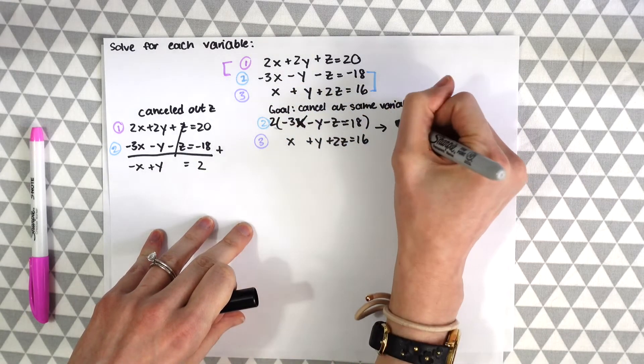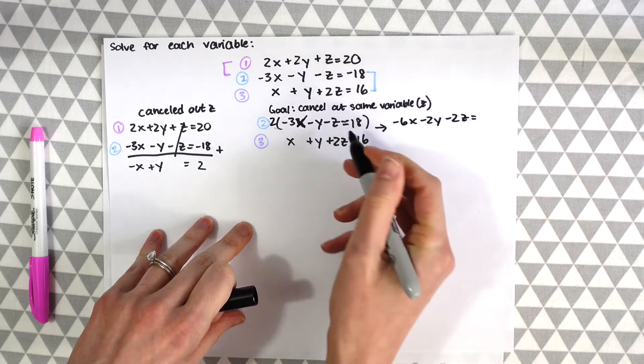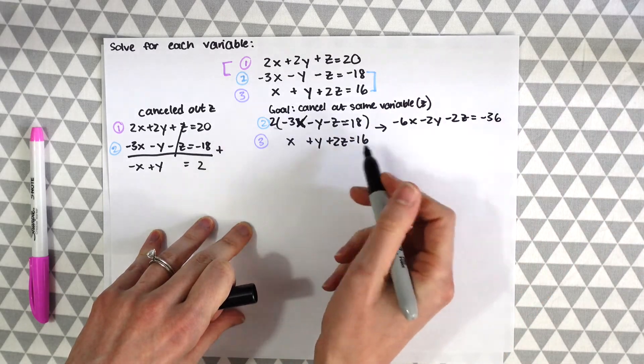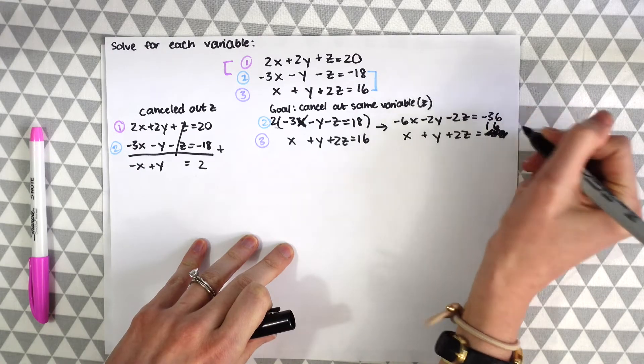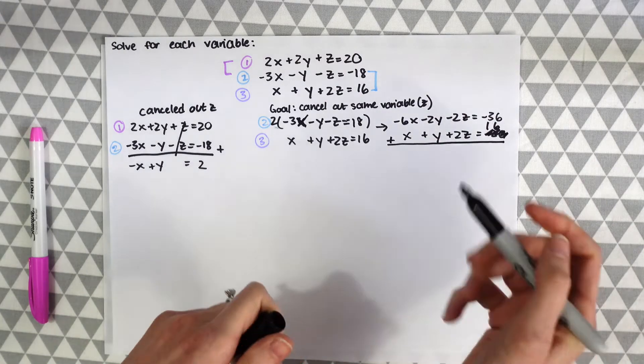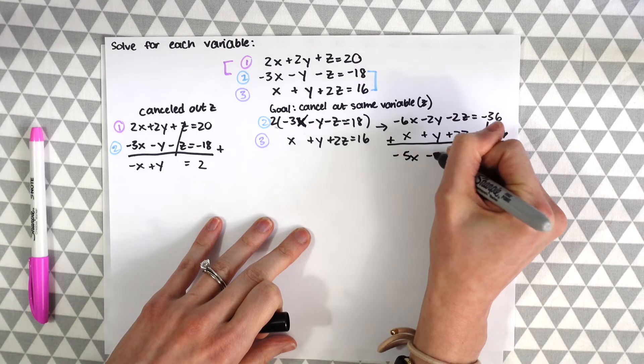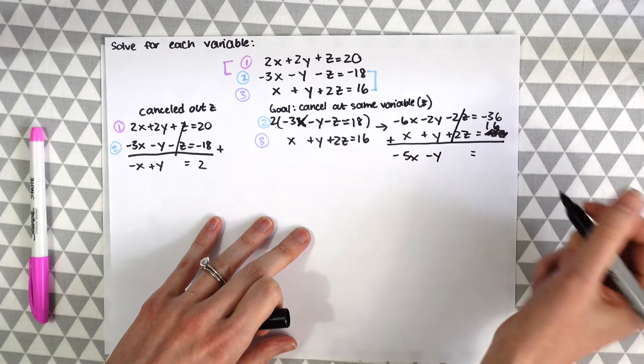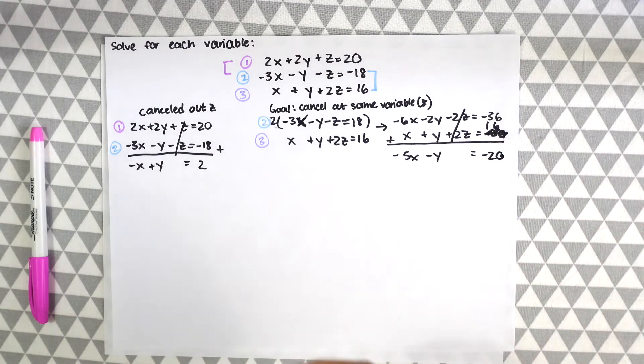So what we're going to have to do is multiply this entire equation times 2. So when we do that we get negative 6x minus 2y minus 2z, and then this is minus 18 which becomes minus 36. And then down here this equation is going to stay exactly the same, x plus y plus 2z equals 16. So now we're going to add all of this together, these two equations together. So when we do that we're going to get negative 5x minus y, and then now our z's cancel out, negative 2z plus 2z that cancels out. And then we have negative 36 plus 16 which just gives us minus 20.